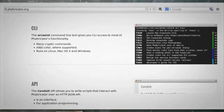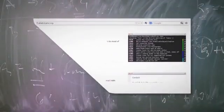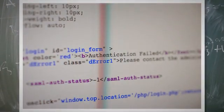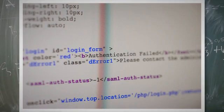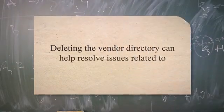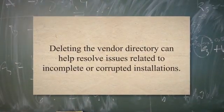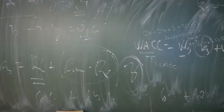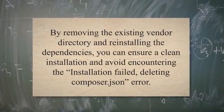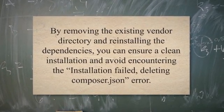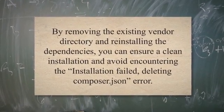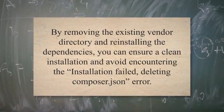To delete the vendor directory, open your command line interface or terminal, navigate to the root directory of your project, and execute the command `rm -rf vendor` to remove the vendor directory. After deleting it, run `composer install` again. This will recreate the vendor directory and install the dependencies required for your project. Deleting the vendor directory can help resolve issues related to incomplete or corrupted installations. Remember to back up any necessary files or configurations before deleting the vendor directory to prevent data loss.